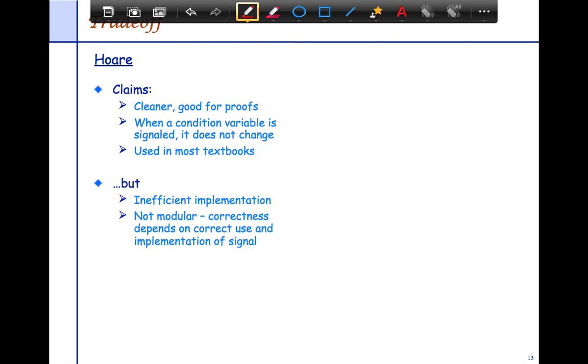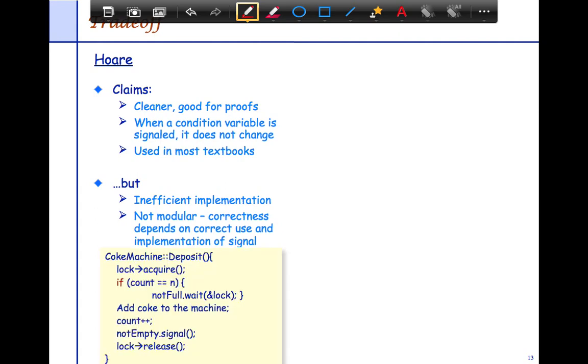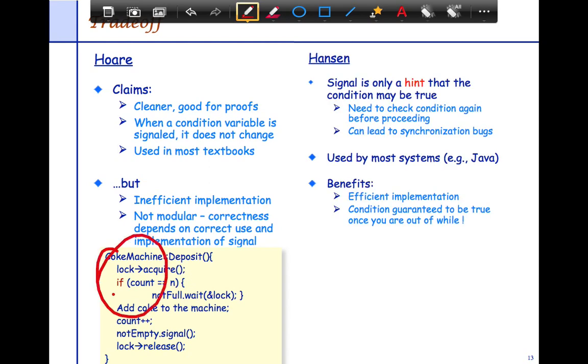So the big trade-off is with Hoare, in general, it's just cleaner and good for proofs. And the conditional variables kind of signal does not change, so you have this explicit handoff. And it's easier to write correctness proofs. But it's really inefficient in implementation because you need the strong guarantee that when someone notifies or signals another thread about the monitor, this one hands it over. So you not only signal to the other person to wake back up and check the condition again, it actually gives up the monitor to the other thread, which is stronger implementation. So in this case, you would use the IF, and the IF is sufficient because once you wake back up from the waiting, you can just proceed immediately.